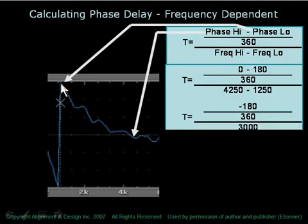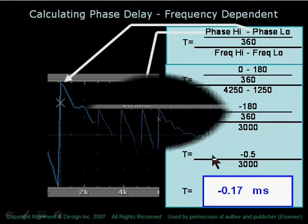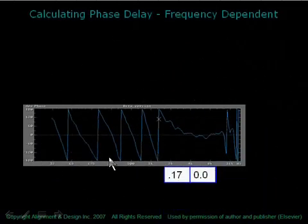And ranges down to 1,250 for a 180 degree change, or half a wavelength, over a 3000 Hz span. This translates to one half of a cycle over 3000, which is 0.17 ms.